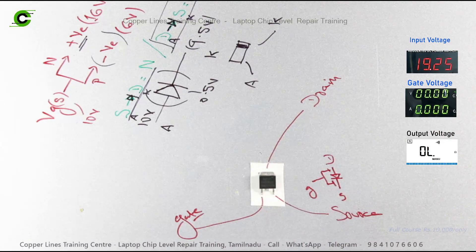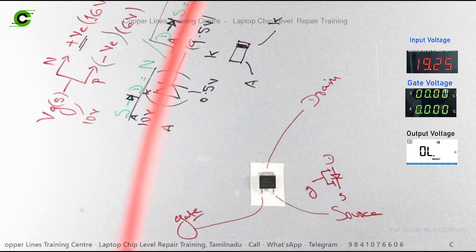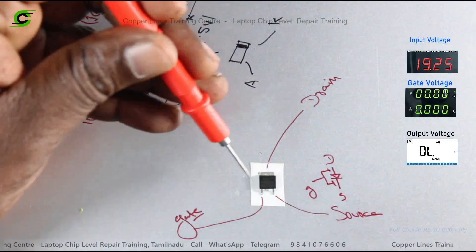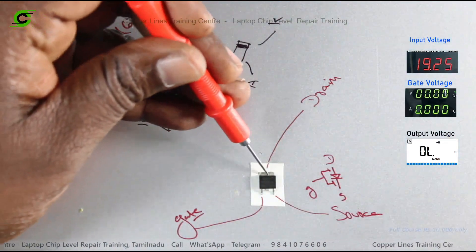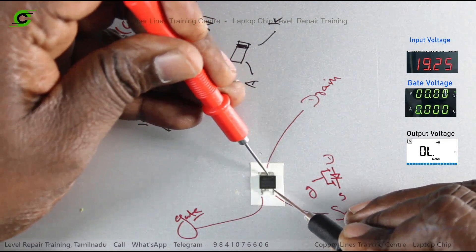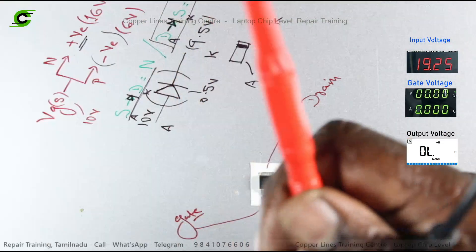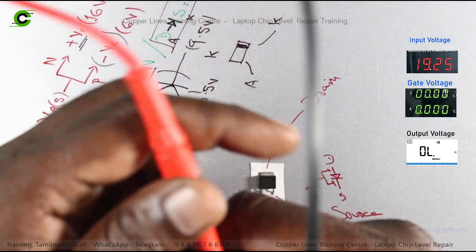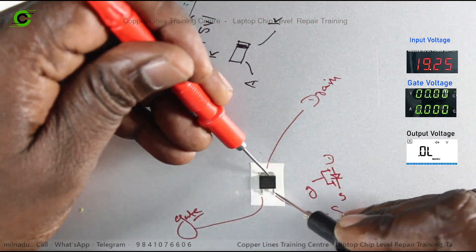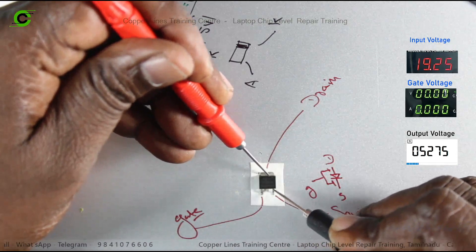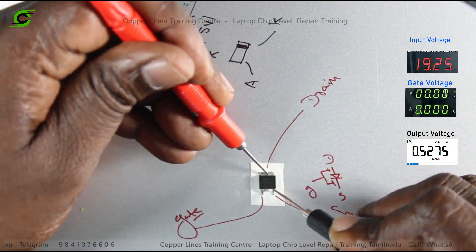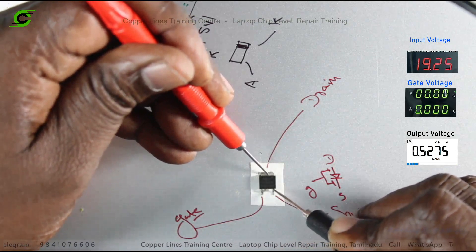Where is the anode? Drain. Where is the cathode? Source. Using a multimeter on the diode range, drain to source on the P channel MOSFET reads 527 — that is 0.5 volts.